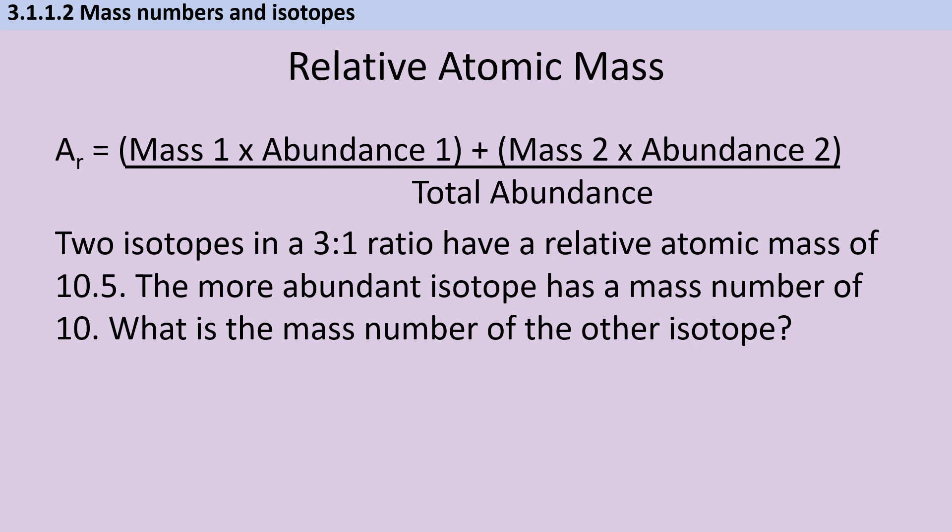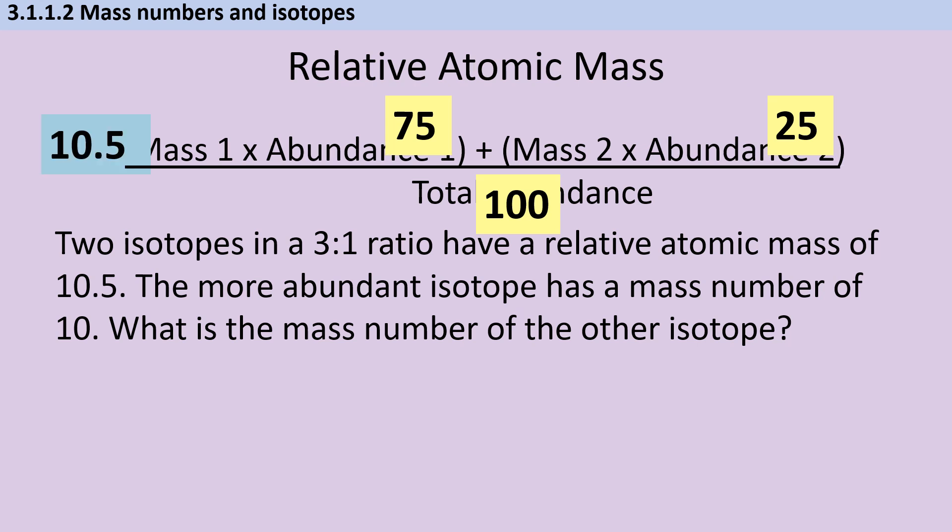Now at this point, it's entirely up to you whether you want to use three and one as the abundances and put them over a total of four or whether you're happier working with percentages. Personally, I quite like percentages, so that's the route that I'm going to take. So my abundance one is going to be 75 and my abundance two is going to be 25 and my total abundance is 100. We've already said that the relative atomic mass is 10.5 and the most abundant isotope has a mass of 10. And let's call the mass of the other isotope X.